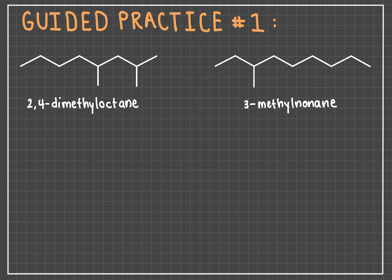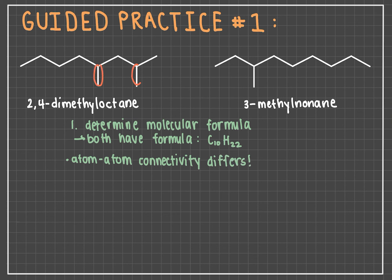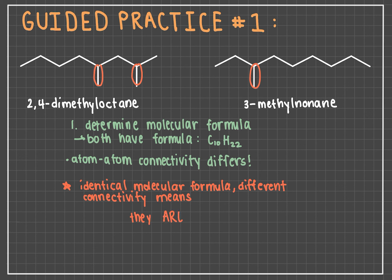Now let's look at some more extensive examples of constitutional isomers and how to identify when two or more molecules are constitutional isomers of one another. Example one: we have 2,4-dimethyloctane and 3-methylnonane. First and foremost, it's important to determine the molecular formula for both molecules by counting the number of carbons and hydrogens present. A quick count shows that both molecules have a molecular formula of C10H22. When examining the molecules, the atom-to-atom connectivity differs: 2,4-dimethyloctane has two methyl substituents bound to an 8-carbon chain, and 3-methylnonane has one methyl substituent bound to a 9-carbon chain. Because they are two unique molecules with identical molecular formula that only differ in connectivity, they are constitutional isomers.